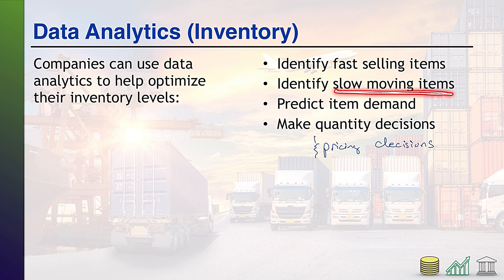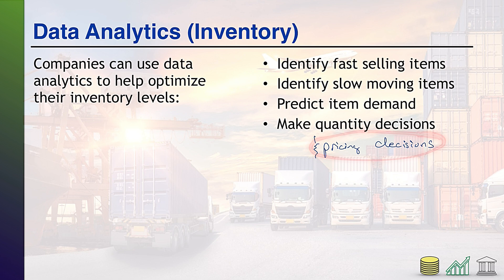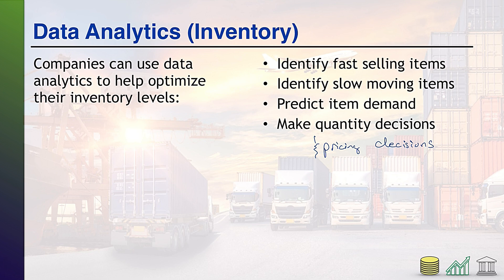To the extent that your slow-moving items can be fixed — say, you make a pricing decision that might entice them to move faster — you're going to make that pricing decision. And in conjunction with that, you might make a quantity decision saying it's slow now, but we're going to offer a huge sale or bundle it with something else, so we expect it to move faster. Therefore, we're going to bring more in, even though it's a slow-moving item now.